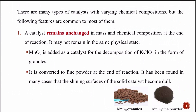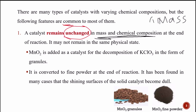There are many types of catalysts that vary in chemical composition, but the following features are common to all of them. First, a catalyst remains unchanged in mass and chemical composition at the end of the reaction. However, it may not remain in the same physical state.